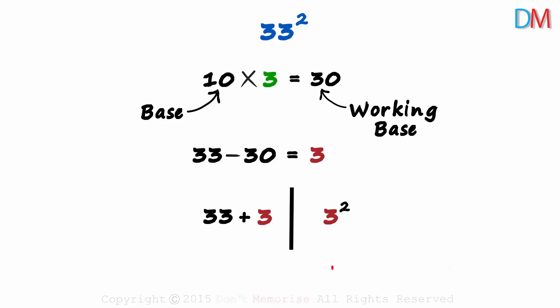The number of digits we should write on the right of the partition is equal to the number of zeros in the base. As we have just one zero in the base, we write just one digit on the right.